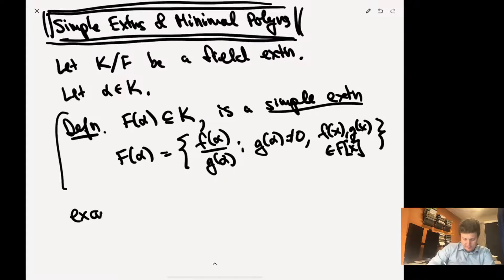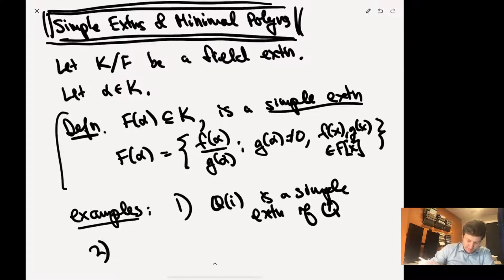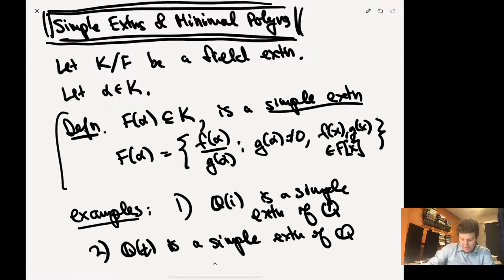Two simple examples: Q adjoin i is a simple extension of Q. And Q adjoin t is also a simple extension. One is transcendental, one is not transcendental.